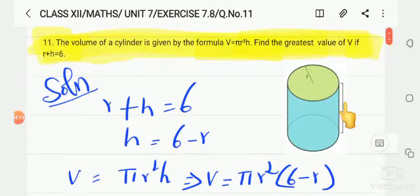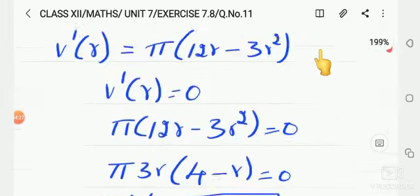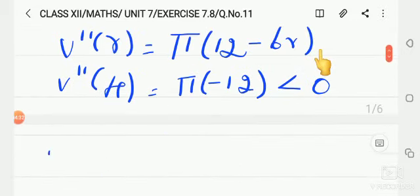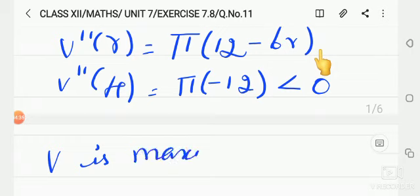Because the question asks to find the greatest value of volume. Volume is now greatest, because the maximum has been attained. Therefore, v is maximum when r is equal to 4.